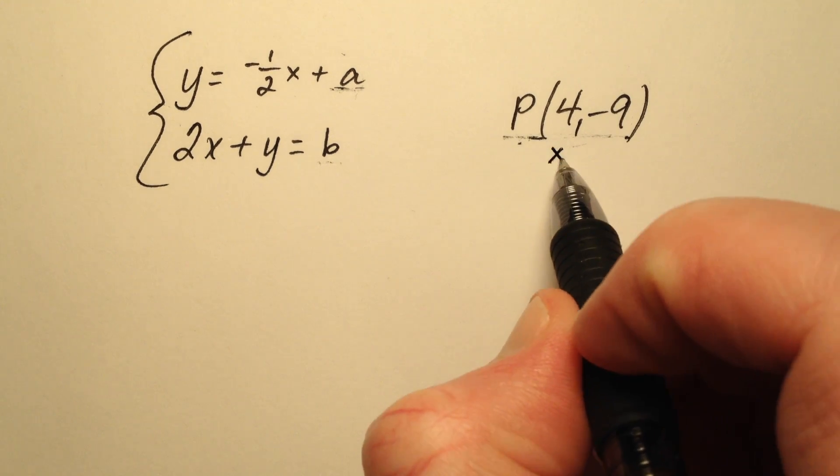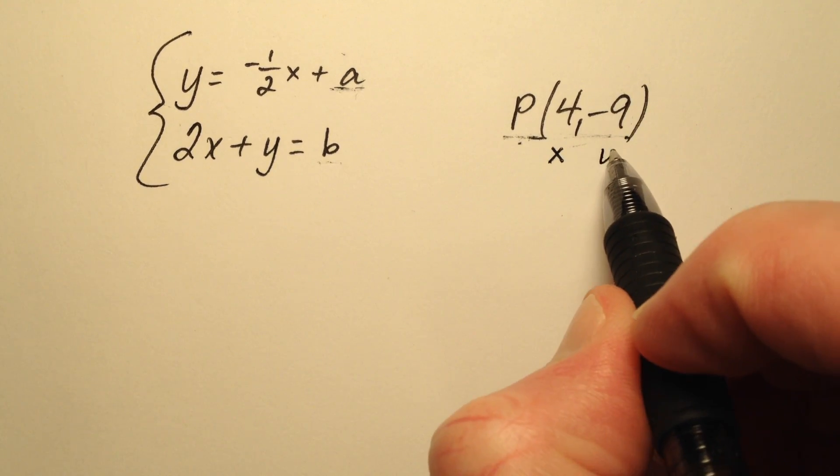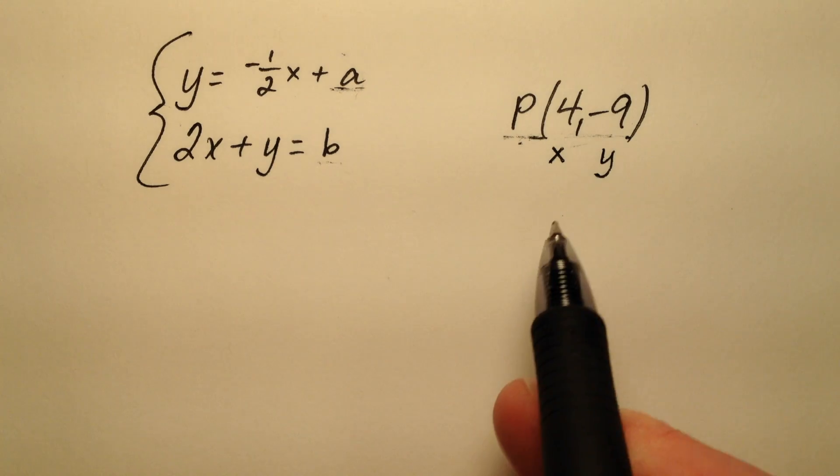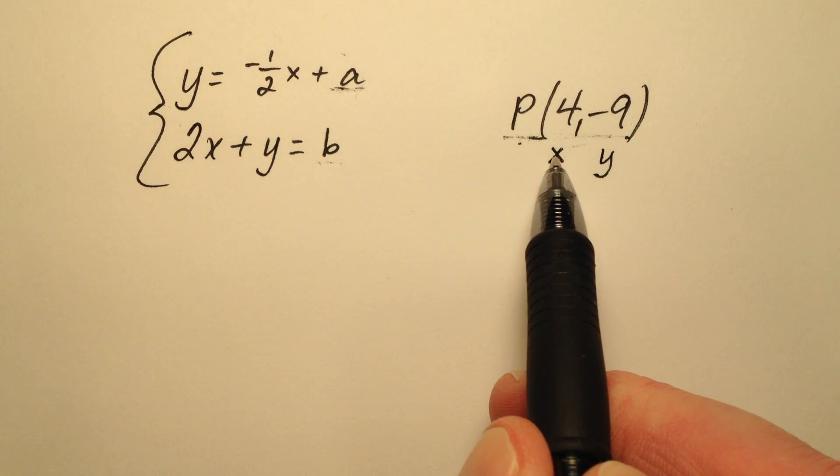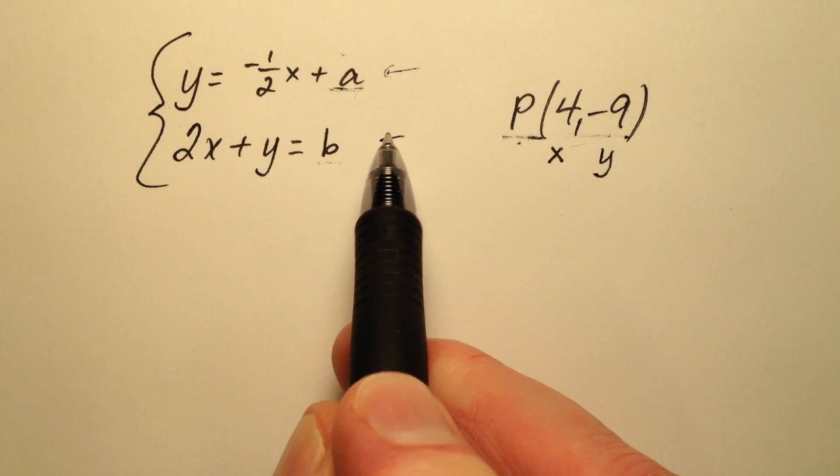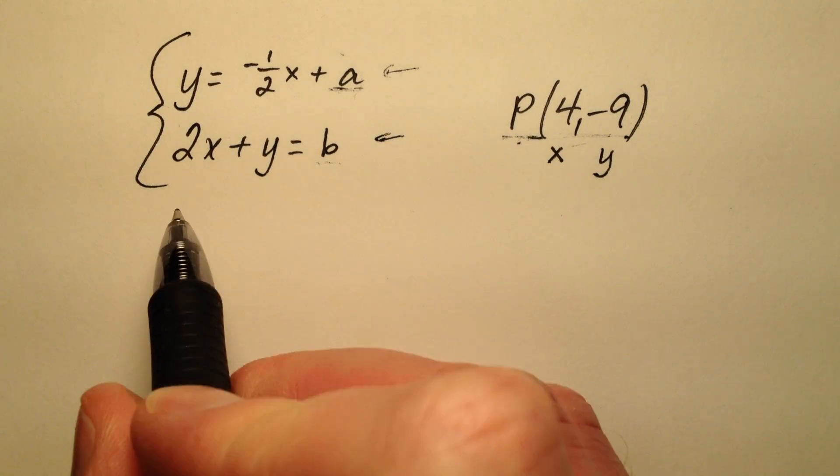So 4 is the x coordinate and negative 9 is the y coordinate. I'm going to go ahead and plug in 4 for x and negative 9 for y into both of these equations and then see what I've got.